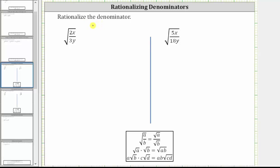We are asked to rationalize the denominator. Here we have the square root of two x divided by three y. The first step is to write the square root of the fraction as the square root of the numerator divided by the square root of the denominator. So the given expression is equal to the square root of two x divided by the square root of three y.